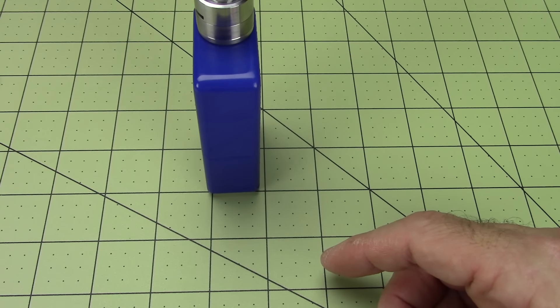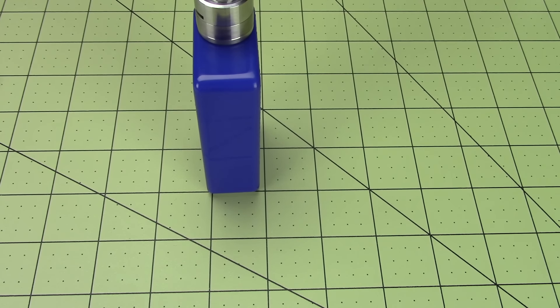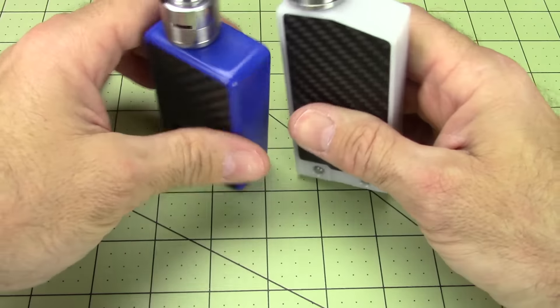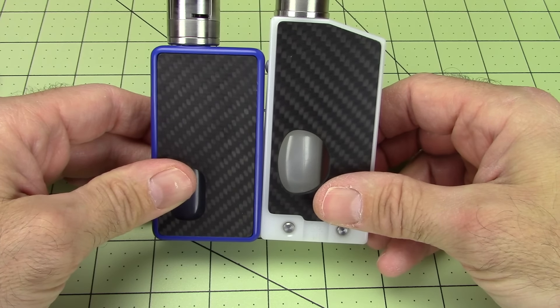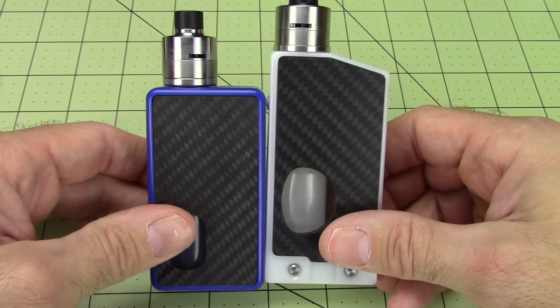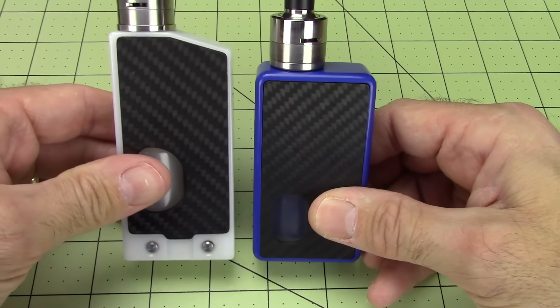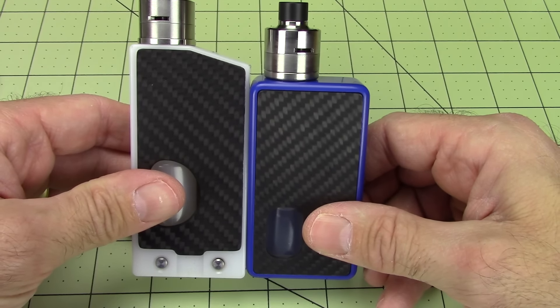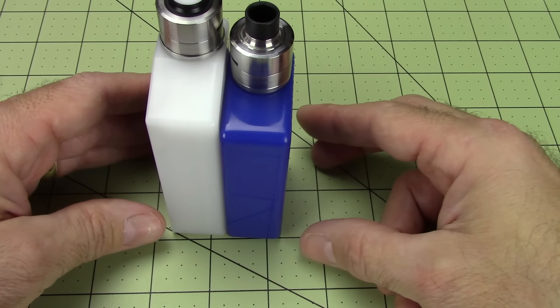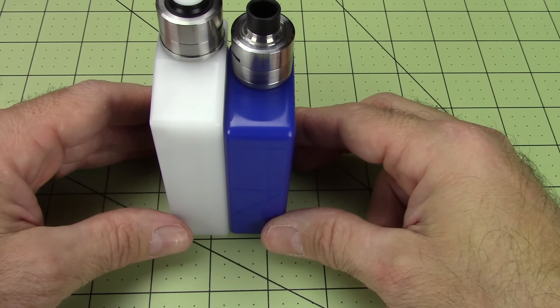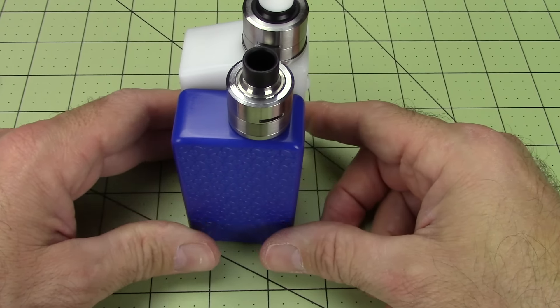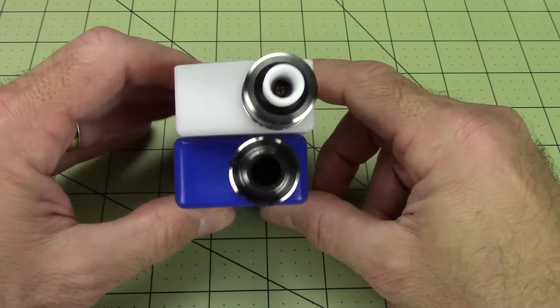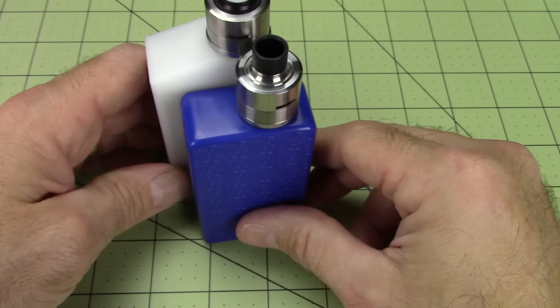We'll compare it to a Sunbox E8. Somewhat smaller than a Sunbox E8. Width is very similar or the depth I should say and the width is about similar. Just a considerably smaller mod.